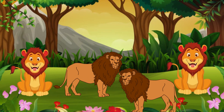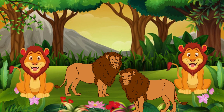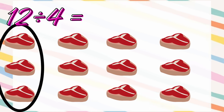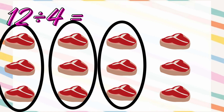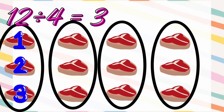Now let's share twelve steak slices among four lions. Here we have twelve steaks. Let's share them into four equal groups: one, two, three, four. Let's count how many steaks each lion gets: one, two, three. Twelve divided by four is three.